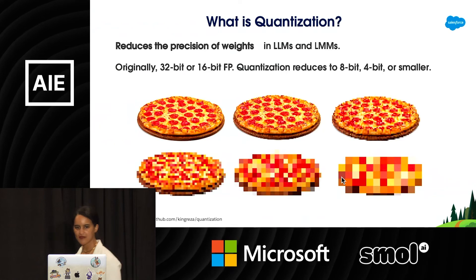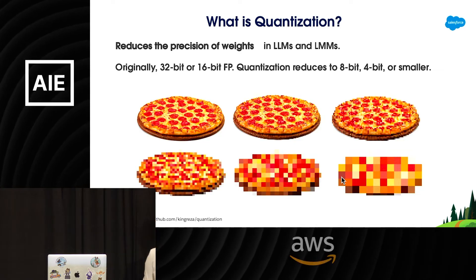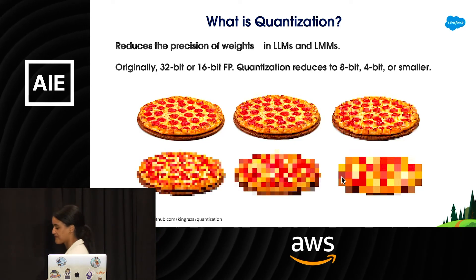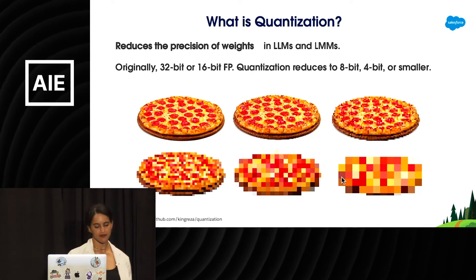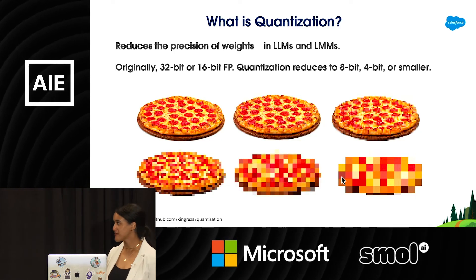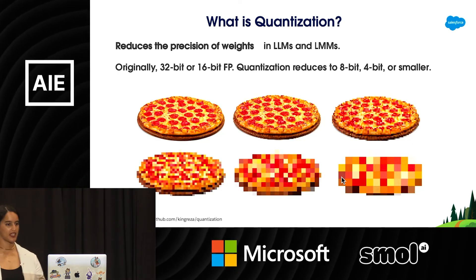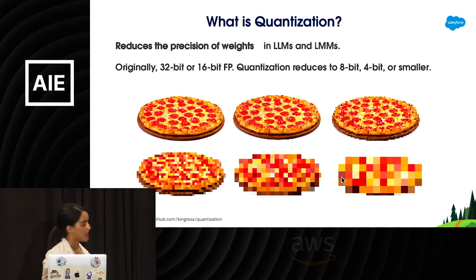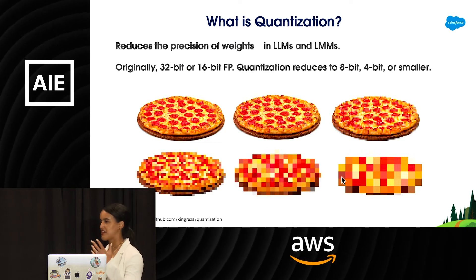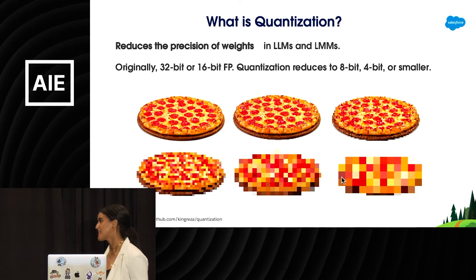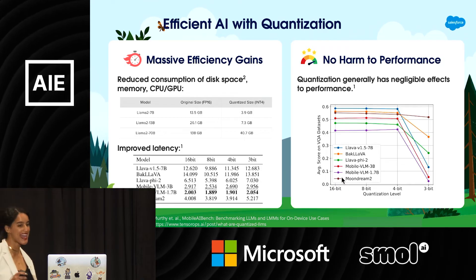Quantization is actually not a new topic — what's new is applying it to LLMs and multimodal models. The idea is to take a big number and map it to a smaller number. For LLMs, we want to reduce the precision of the weights. Typically, weights in LLMs are 32-bit or 16-bit floats. Quantization reduces that 32 or 16 bits down to 8, down to 4 bits — reducing the precision of all those weights.